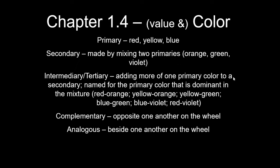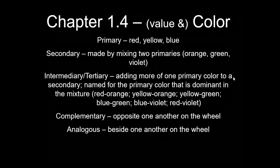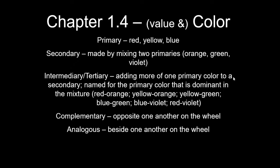The first triad we'll look at is the primary colors: red, yellow, and blue. We refer to those as the primaries because they are the colors we use to create all of the others. You can't create yellow, blue, or red by mixing, but from those you could create any other color. Your secondary colors are made by mixing two primaries — think of the primaries as the parents of the secondaries. Red plus yellow gives you orange, yellow plus blue gives you green, red plus blue gives you violet, or what we usually call purple.